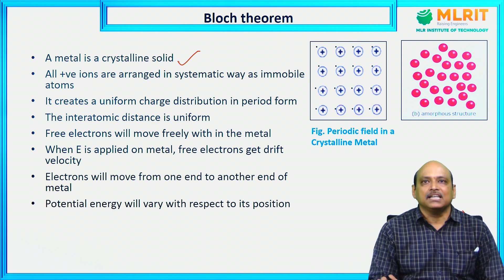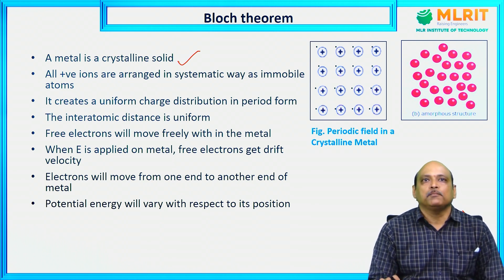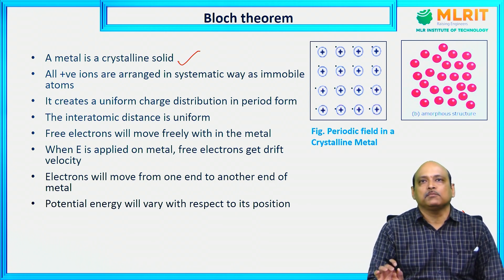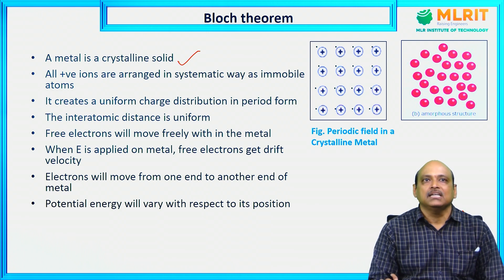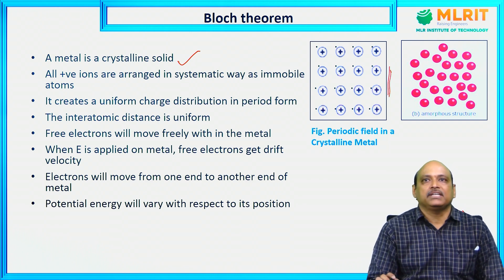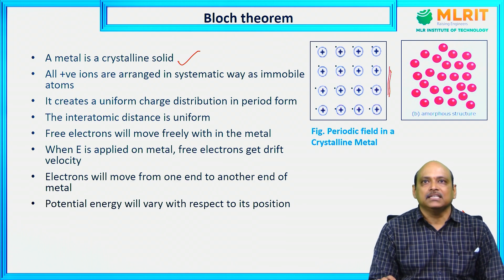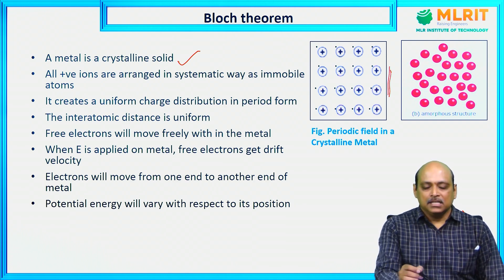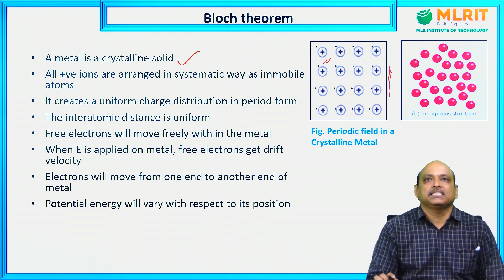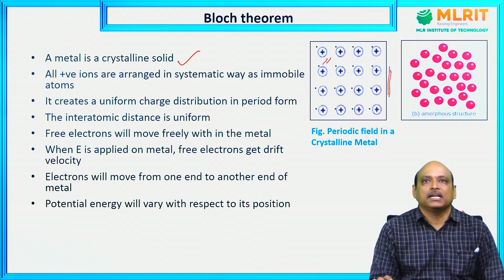What is a crystal? A crystal is nothing but a material in which atoms or ions are arranged in a systematic manner. If you take a metal or conductor, it is nothing but ions or atoms arranged in a systematic manner. In this diagram, all positive ions in a metal are arranged systematically. A circle with a positive symbol represents positive ions.